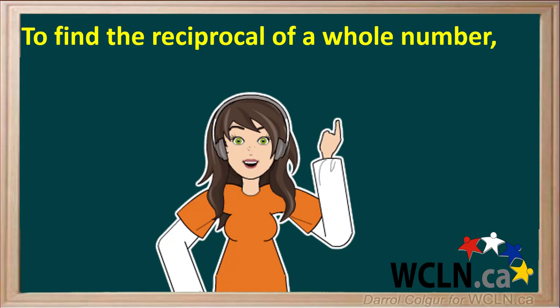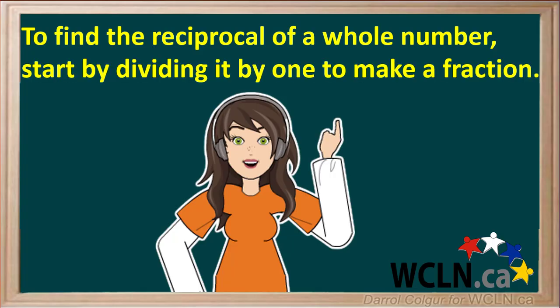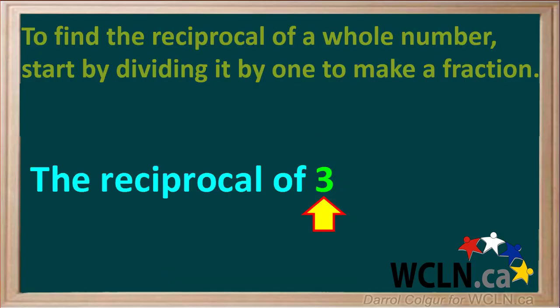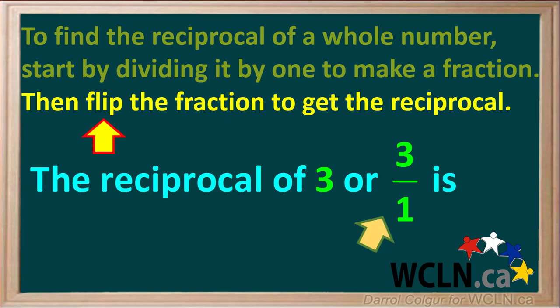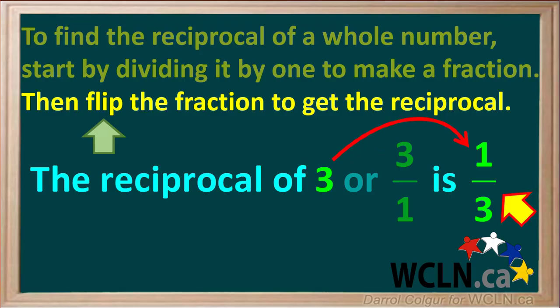Any number divided by 1 is just equal to the same number. So if we want to find the reciprocal of a whole number, we start by dividing it by 1 to make a fraction. For example, if we want to find the reciprocal of 3, we start by dividing 3 by 1 to give the fraction 3/1. We flip this fraction to give us the reciprocal, so the reciprocal of 3 is 1/3.